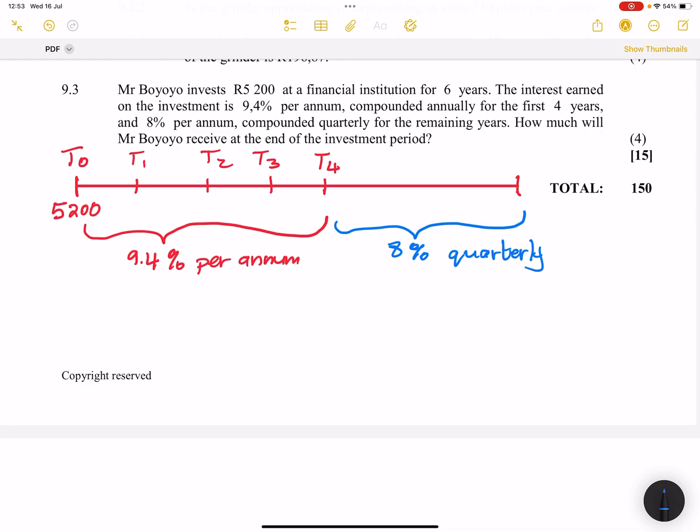They say how much will Mr. Boyoyo receive at the end of the investment period. So we're looking at how much will be there at year number six. All right. Now, ladies and gents, we're simply going to say, so we're looking for the accumulated amount. But first, we need to deal with the first four years.